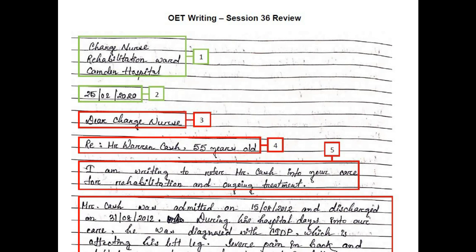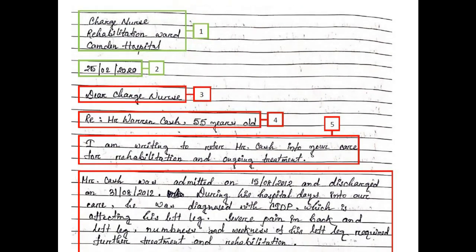Moving to the introduction paragraph: 'I am writing to refer Mr. Cash into your care for rehabilitation and ongoing care' — this is all right, but the introduction misses the condition of the patient, which is a big mistake.